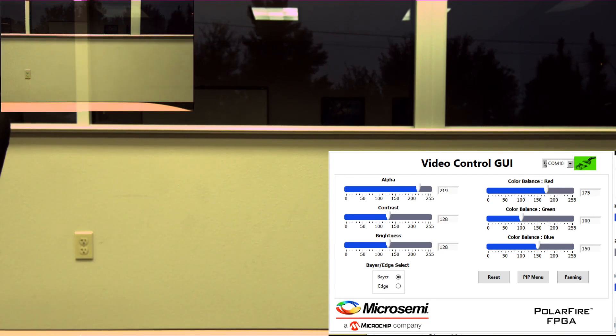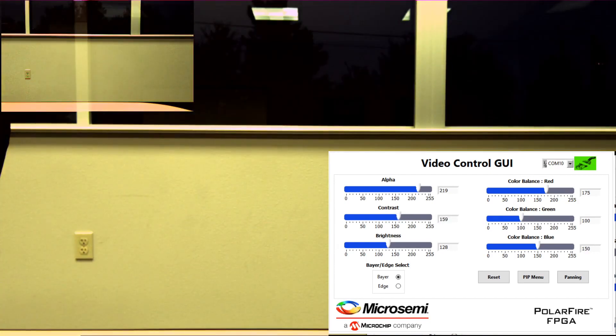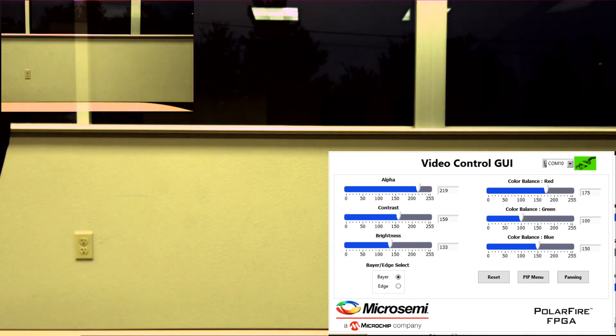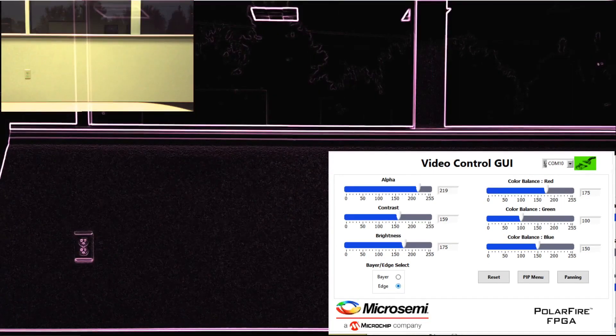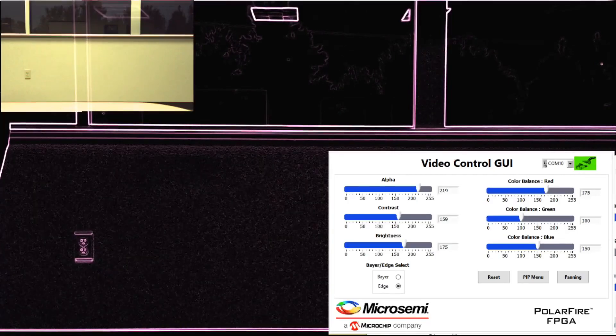PolarFire's sophisticated imaging and video architecture support special image signal processing IPs for edge detection or alpha blending. Designers may set the PolarFire to either bare or image edge detection as well as control the PIP menu and panning of the image.